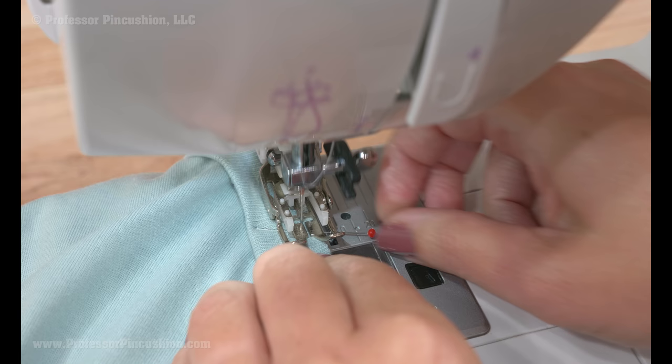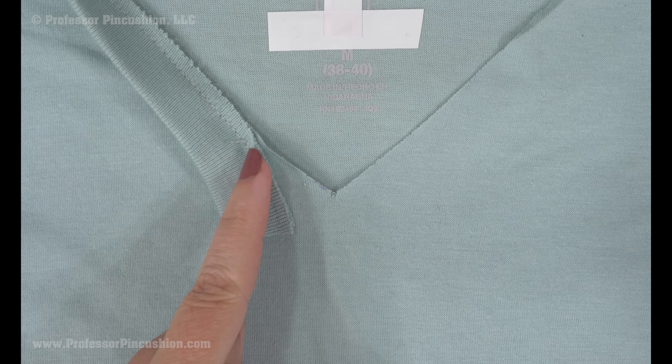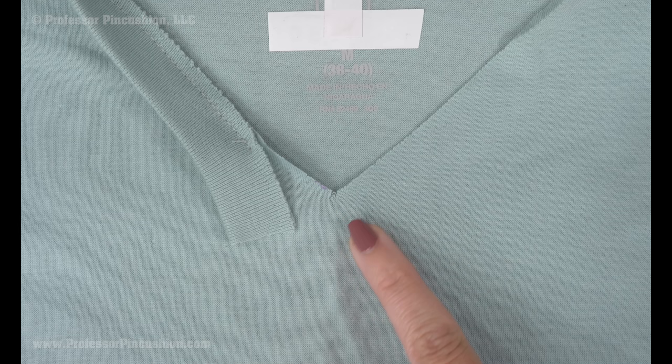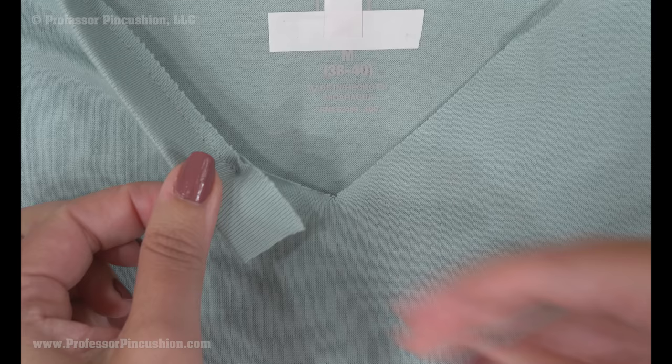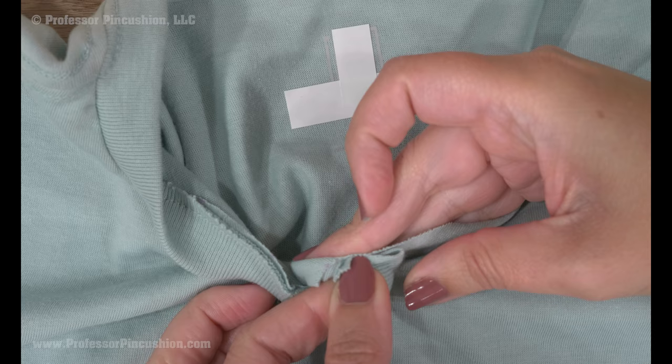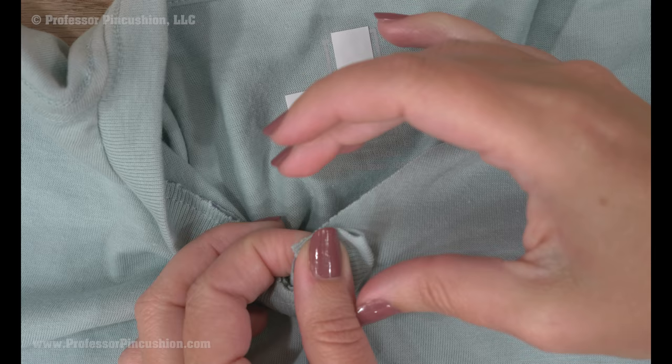This next part is the trickiest part. You can see I stopped sewing about an inch away from my point here. You're going to take this raw edge and line it up with this side here, so from the point and go this way. I'm just going to take this, flip it over to this side, matching up the raw edges. And you can see this folded edge is on this side. Go ahead and pin this into place.